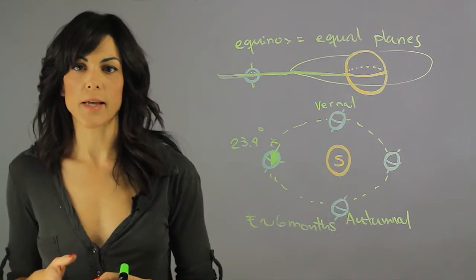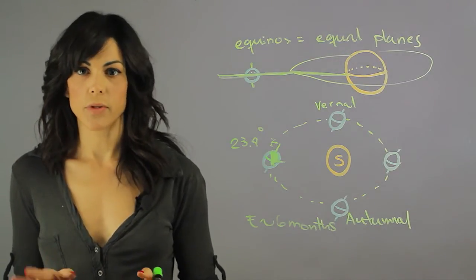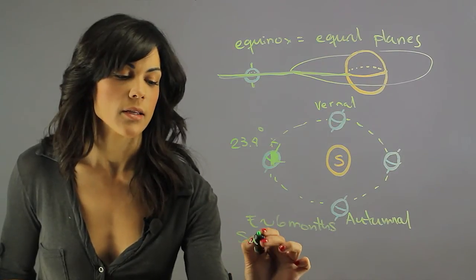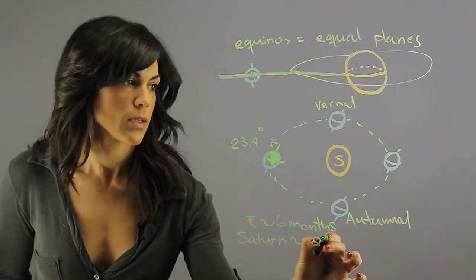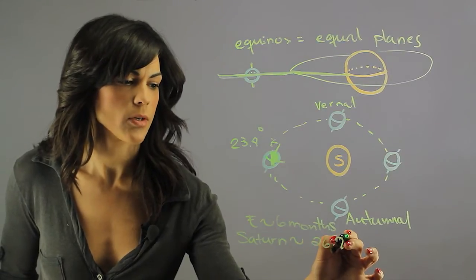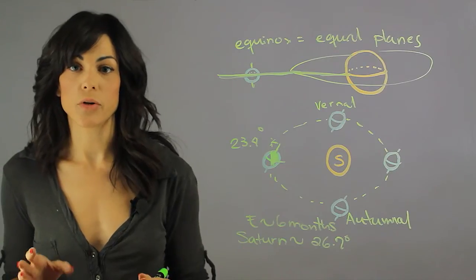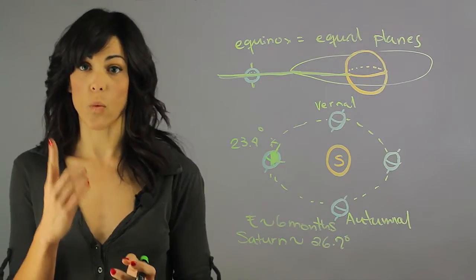So then let's talk about a couple of other planets that are famous for their equinoxes. The other planet that has a really high inclination is Saturn. Saturn has an inclination of 26.7 degrees, and the orbital period around the Sun is about 30 Earth years. So it takes 30 Earth years for Saturn to go around the Sun once.